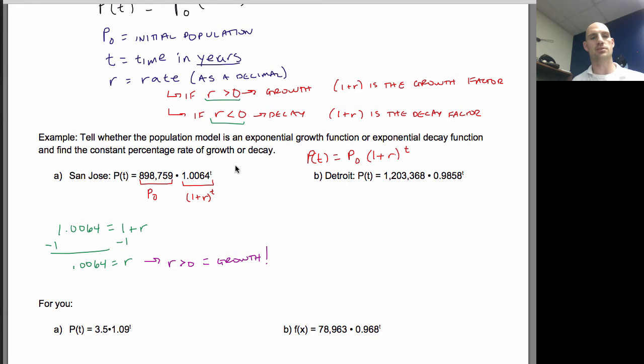Second part is, what is the percentage rate of growth or decay? So percentage means take that rate and convert it to a percent. So R to a percent equals 0.0064 times 100, which is equal to 0.64 percent growth.